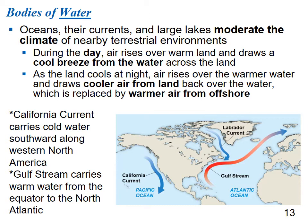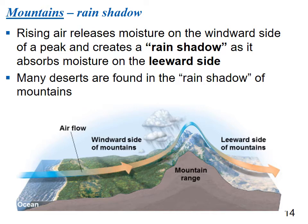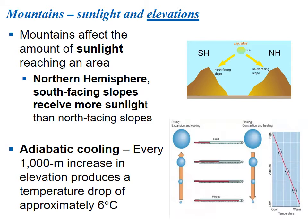Mountains also affect climate. Rising air releases moisture onto the windward side of a peak and creates a rain shadow as it absorbs moisture on the leeward side — many deserts are found in the rain shadow of a mountain. South-facing slopes in the northern hemisphere receive more sunlight than north-facing slopes. Adiabatic cooling means every 1,000 meters increase in elevation produces a temperature drop of approximately 6 degrees Celsius, as air expands and cools rising and contracts and heats as it sinks.